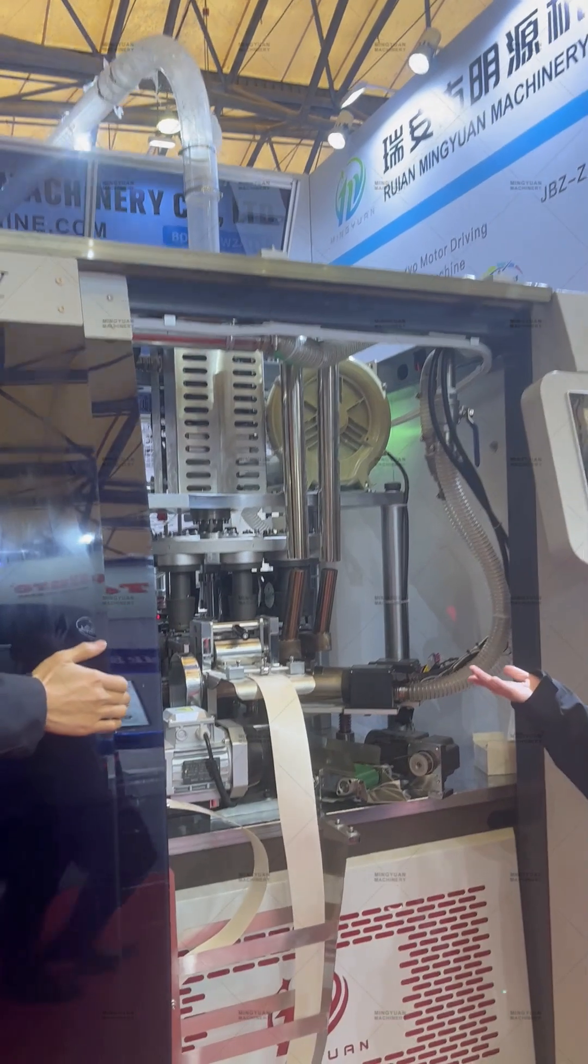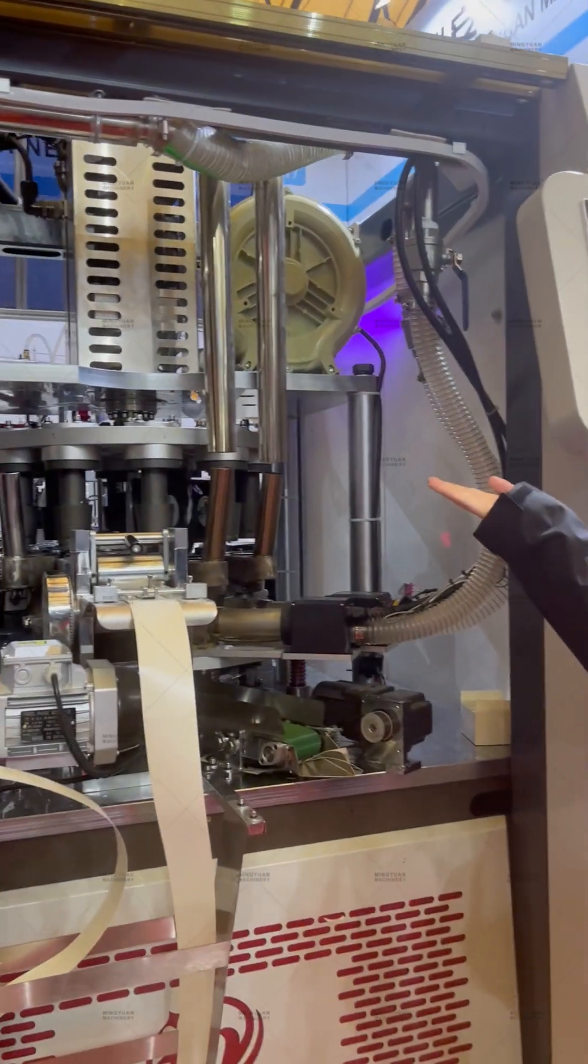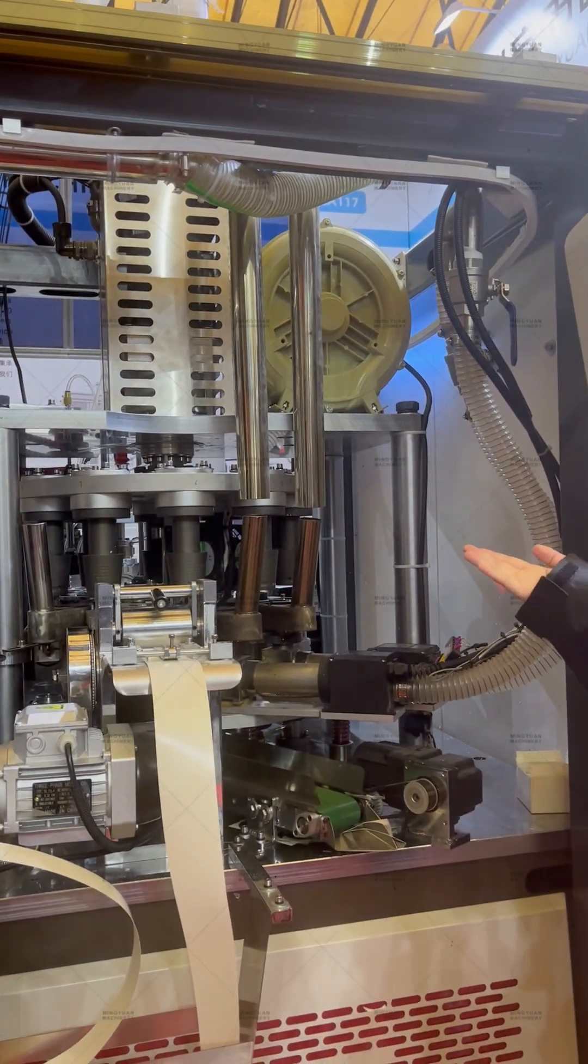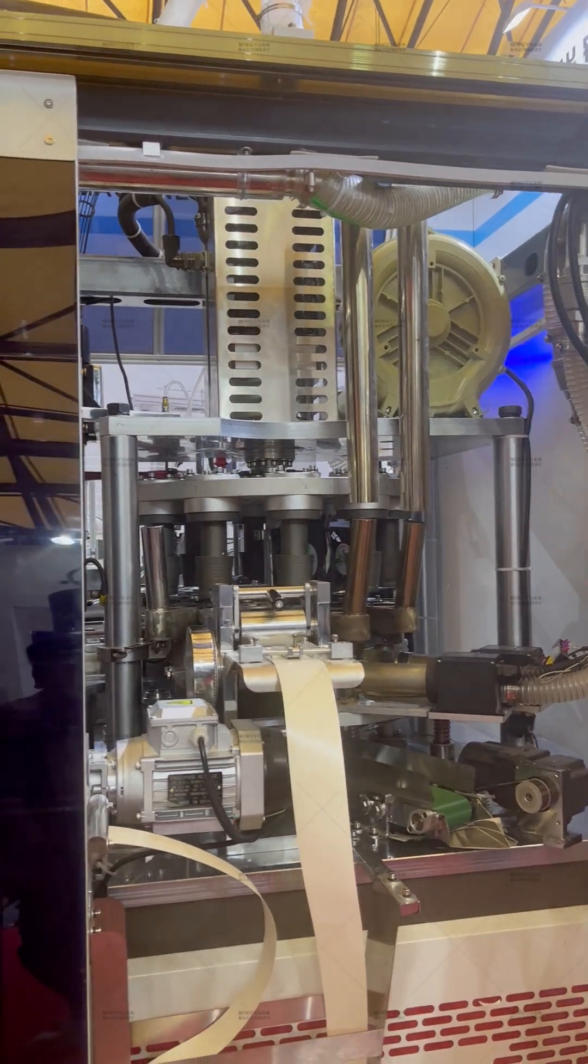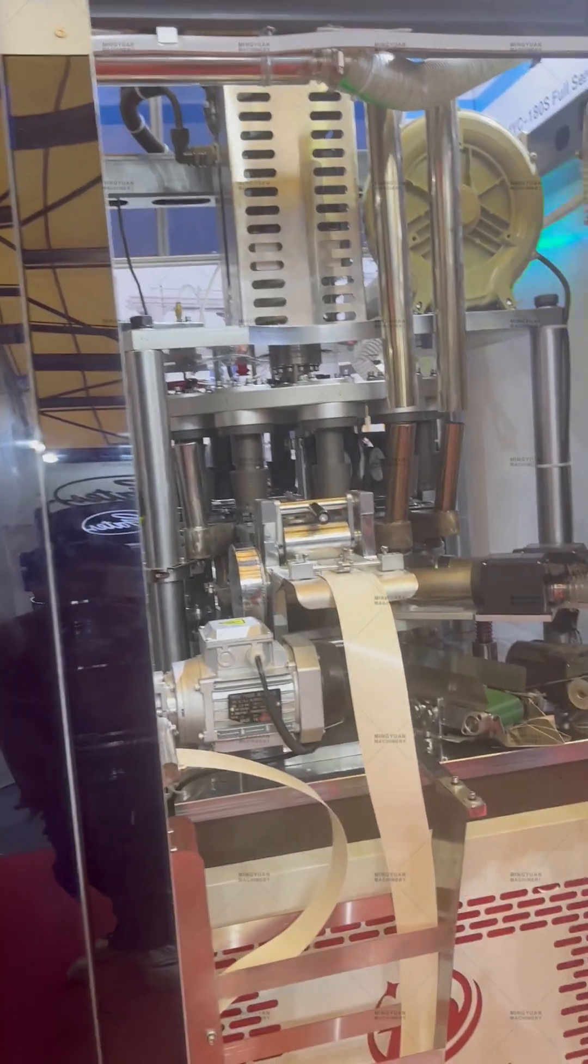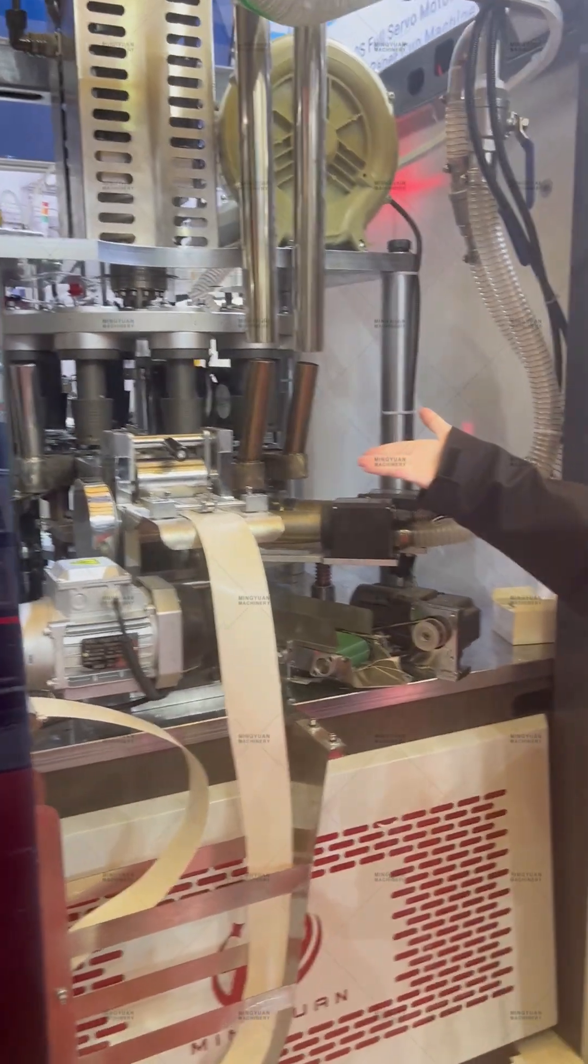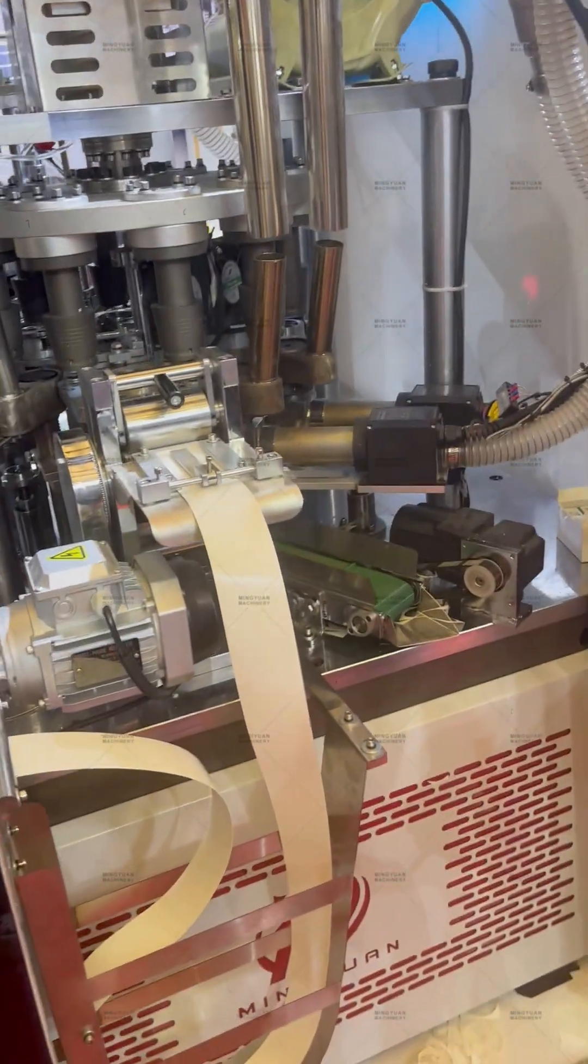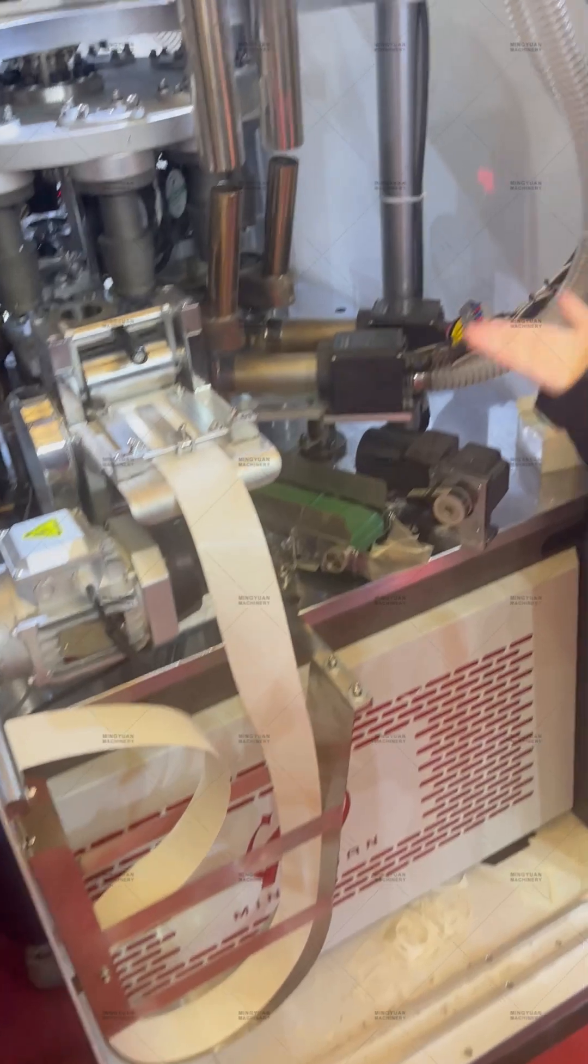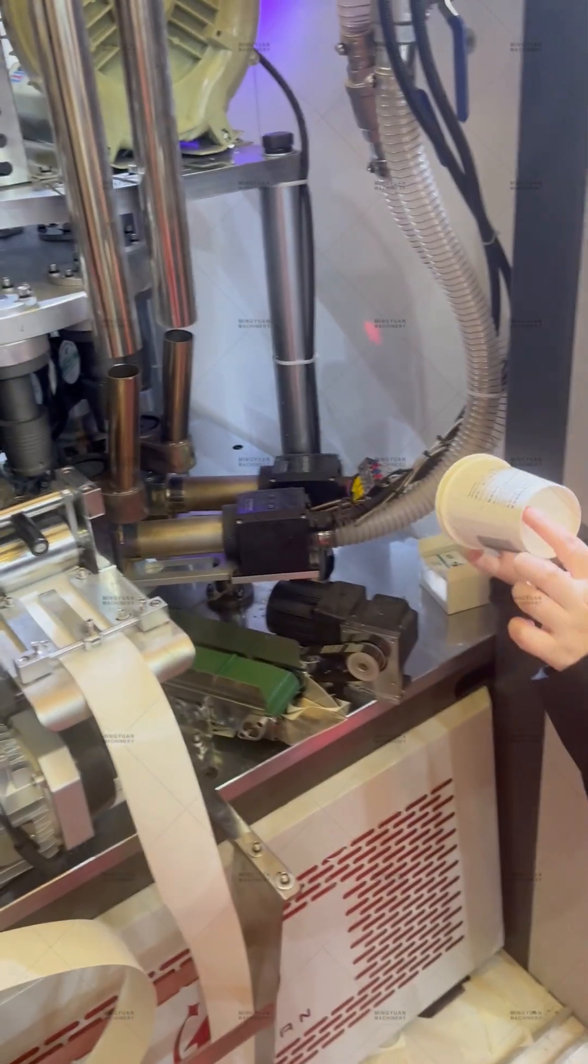You will see two big turn tables. This is a big turn table. It is controlled by one servo motor. It will punch bottom paper, feed bottom paper, seal bottom paper, and also make a cup curling.